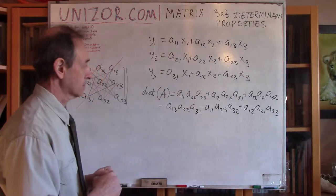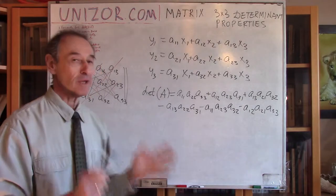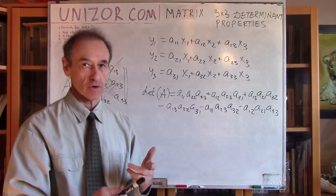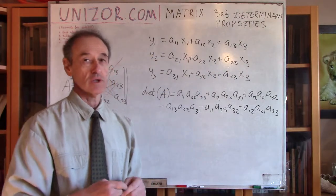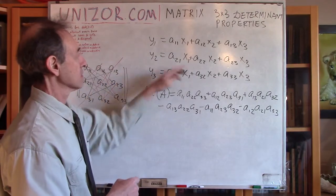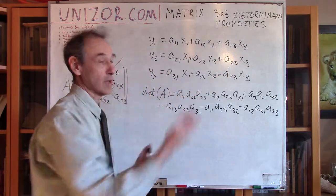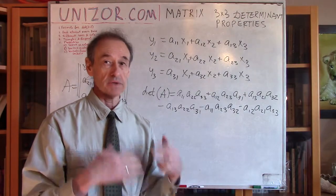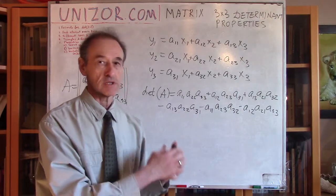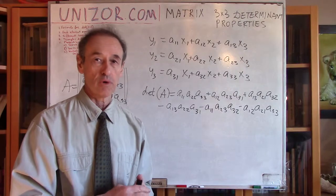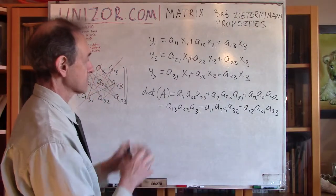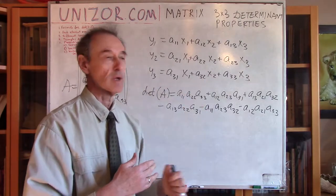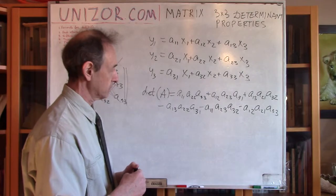Now it looks cumbersome, and it is, but it has really wonderful properties. First of all, equality of this expression to zero means that the system does not have a unique solution — the system of linear equations or the transformation is not reversible. You cannot find x from y. That's essentially the same thing as the system not having a unique solution. That property by itself is extremely interesting. We saw this with the 2x2 matrix, and this is the expression for the 3x3 matrix. For any square matrix, we have this type of expression — the determinant — which determines whether the system does or does not have a unique solution.